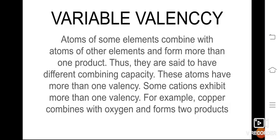Variable valence — what is the meaning of variable valence? Some atoms, depending upon the situation, may have different valence. These atoms have more than one valence. In some places they have one valence, in other places more than one. For example, copper combines with oxygen to form two products — copper oxide and cuprous oxide. In one case it has a valence of 2, and in another a different valence depending on the place.